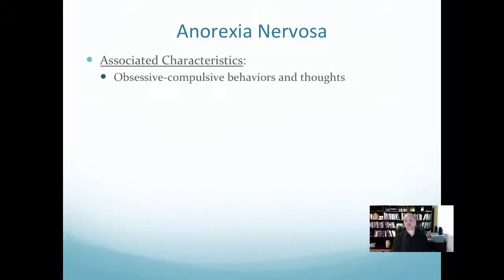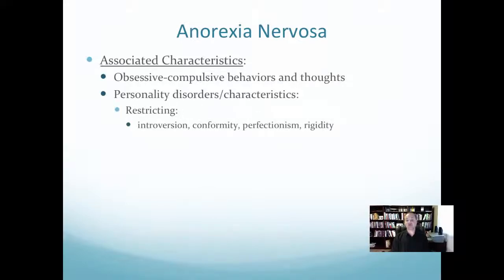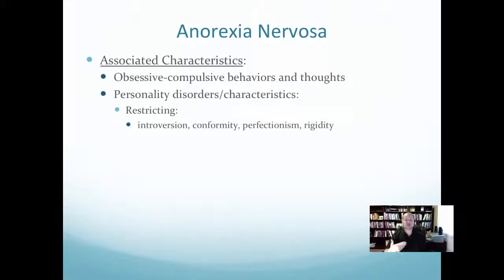Associated characteristics of anorexia include obsessive-compulsive behaviors and thoughts specifically about body weight and mass, and personality disorder characteristics. The restricting type tends to be more introverted, highly perfectionistic, and rigid — wanting to control the world around them. One patient described not understanding why people can't stay in their lanes on a five-lane freeway. These individuals tend to highly conform to authority figures and express control through restriction behaviors: 'You can't control what I eat.'